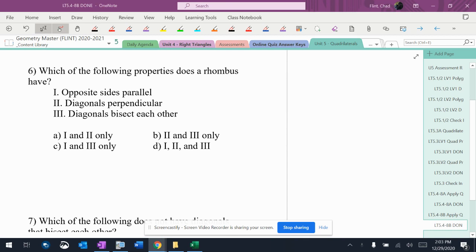We have three properties here, and we want to know which ones a rhombus actually has. First of all, opposite sides parallel - that's definitely true. A parallelogram has that, so a rhombus does too.